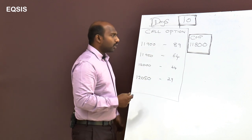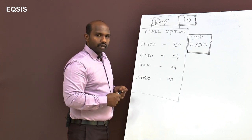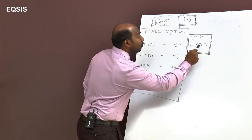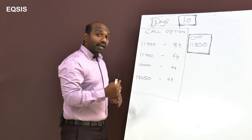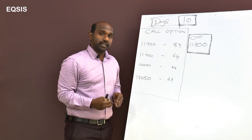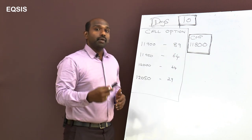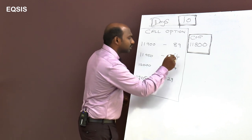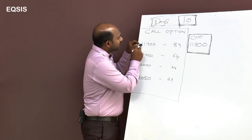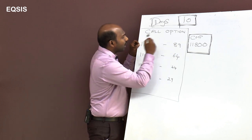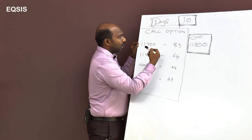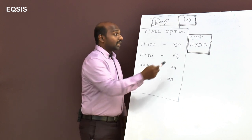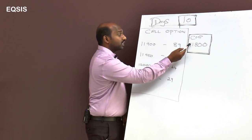Now how do we calculate the premium? Let's say by tomorrow the market goes to 11850 — a move of 50 rupees. What should the premium be? Here's a shortcut: the 11900 strike is 100 rupees away from the current market price, and people are willing to pay 89 rupees for it.